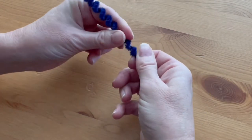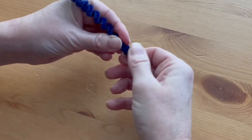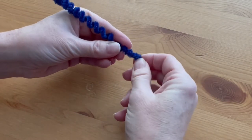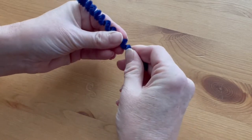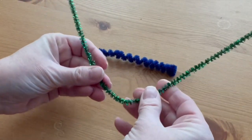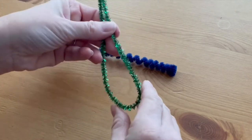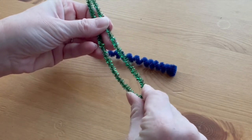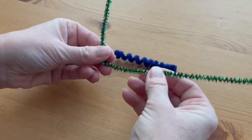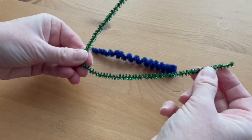This way the dragonfly has a pointier tail. Now make two sets of wings for the dragonfly. Find the middle of one of the green pipe cleaners, and then fold one side into a long skinny wing.